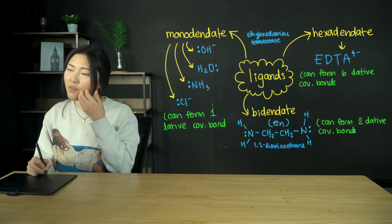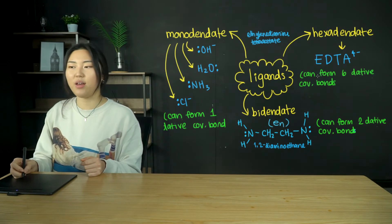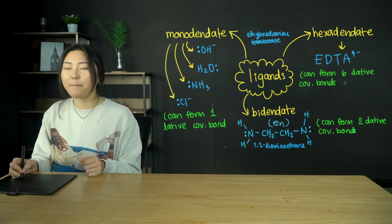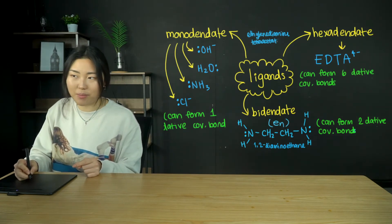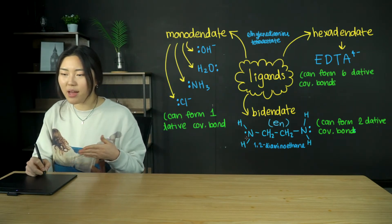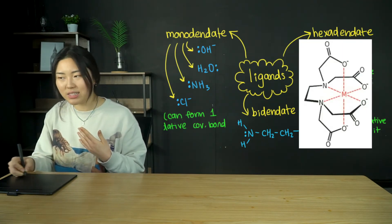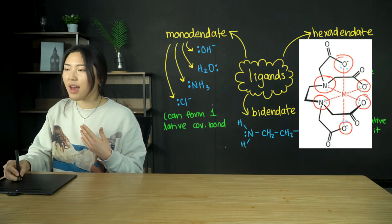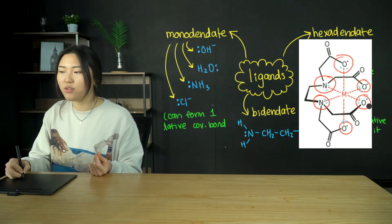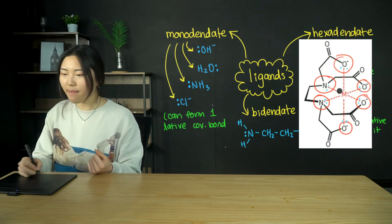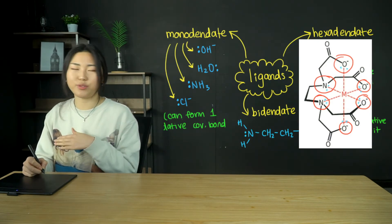We also have hexadentate ligands. For example, EDTA4- has a charge of 4- and can form six dative covalent bonds per molecule. Its full name is ethylenediamine tetraacetate — you don't need to know the name or structure. But if you're curious: it has four acetate groups and two tertiary amine groups, all donating lone pairs to form dative covalent bonds toward the central metal ion.